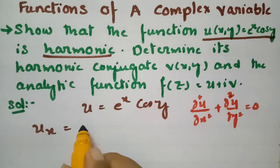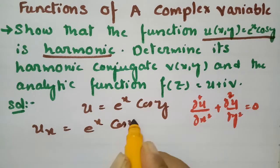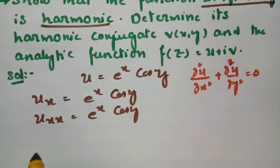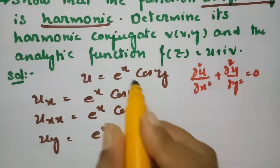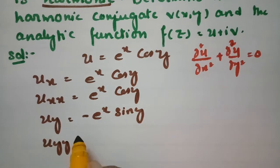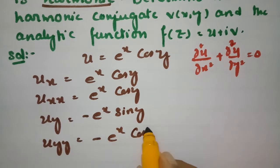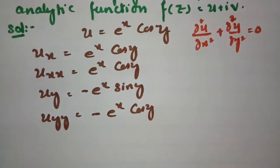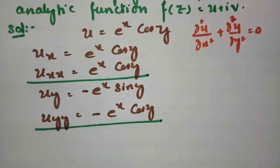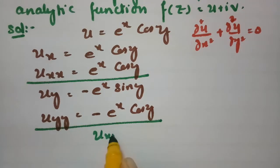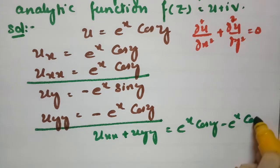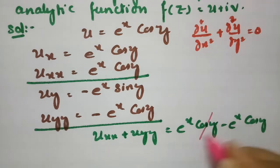First, taking the derivative with respect to x: for eˣ it is eˣ and cos(y) remains, so the double derivative with respect to x is eˣ cos(y). Now for the derivative with respect to y: eˣ is left as is, and for cos(y) this gives minus sin(y). The double derivative with respect to y: for sin(y) this is again cos(y), giving minus eˣ cos(y). Adding these two: uₓₓ + u_yy = eˣ cos(y) + (−eˣ cos(y)).